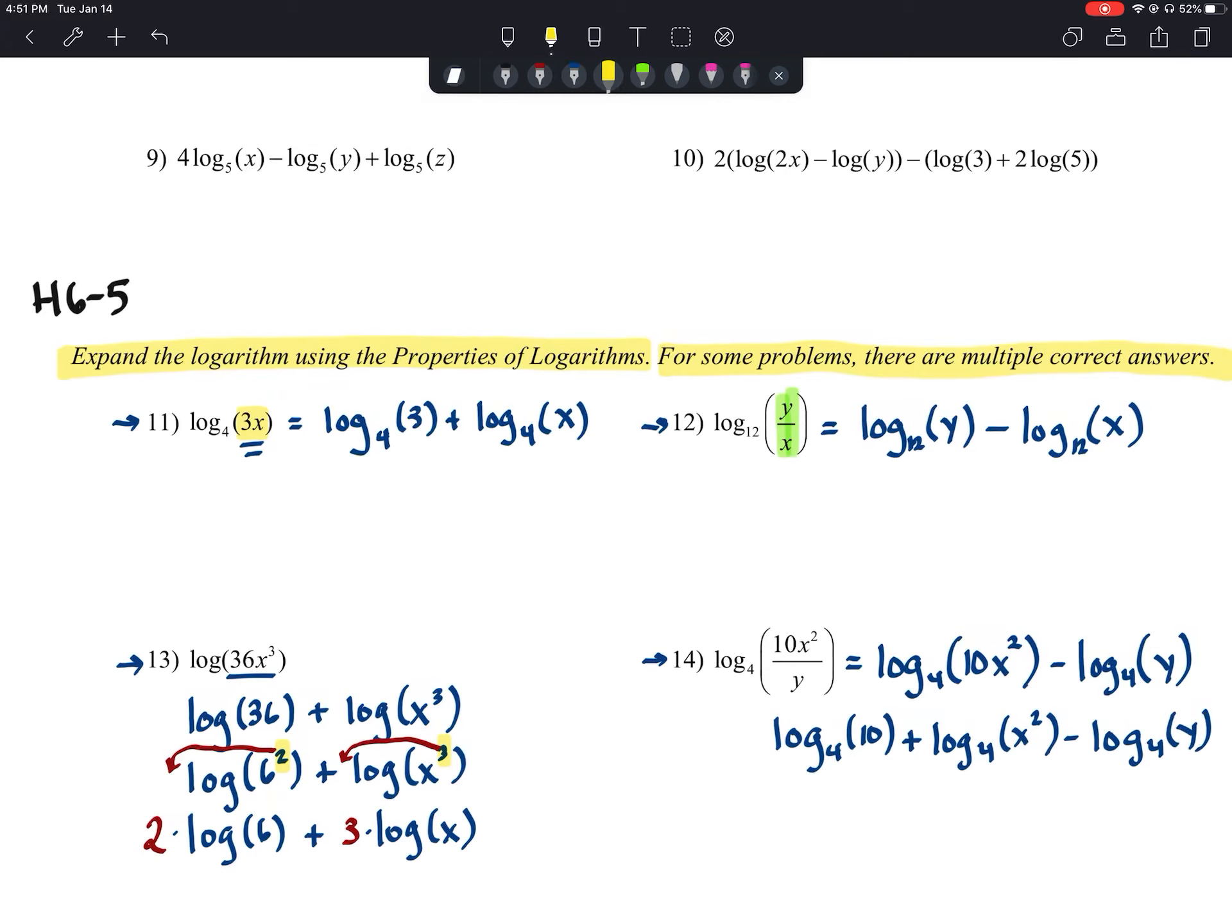And we could break 10 apart too if we wanted to, but I don't want to get carried away. But I am going to apply the power property one more time. So when I go to rewrite this, I'm going to say this is the log base 4 of 10 plus, and then I'm moving that 2 out in the front. So it's plus 2 times the log base 4 of x minus log base 4 of y.